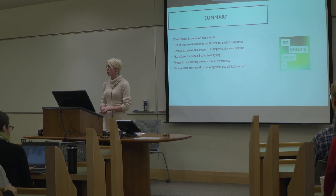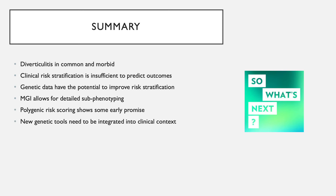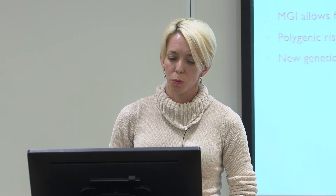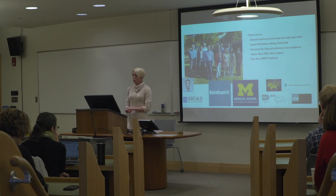In summary, diverticulitis is a very common disease and we're operating in a risk stratification-free zone where clinical factors have failed to predict disease severity or guide appropriate treatment selection. We're hoping to use new data from MGI to subphenotype our patients and make better surgical and medical decisions. Our polygenic risk scoring shows early promise but needs much more refinement, and I strongly feel that any new genetic tools need to be pre-integrated into clinical context so they can actually be useful.